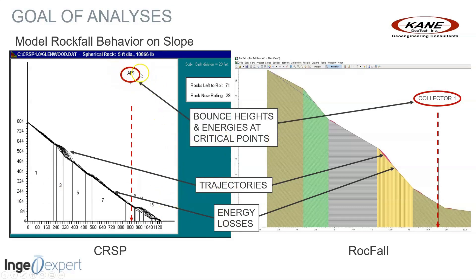CRISP uses a thing called an analysis point, allowing up to three analysis points or APs, which are shown on the profile after the program has been run. Rockfall calls these analysis points collectors. What we get at the analysis points are the energies and bounce heights of the rock at that point. We want to select those collectors or analysis points strategically — for example, by the side of the road or on top of a lip — in order to determine where to put our barrier and how much energy it will have at that point.